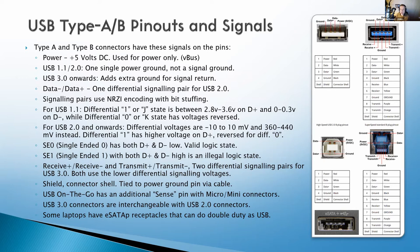When we talk about the pinout of USB, it's actually very simple. We have 5V power, we have ground — and that's power ground, not signal ground — and then we have two data lines, plus and minus. They call the power pin V-Bus. On USB 1.1 and USB 2.0 this is a power ground, not a signal ground. On USB 3.0 they added an additional ground for signal as well.